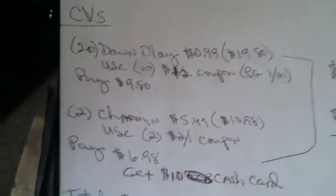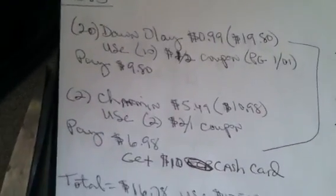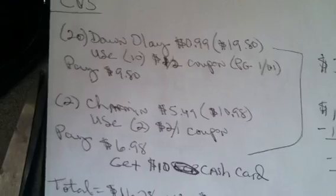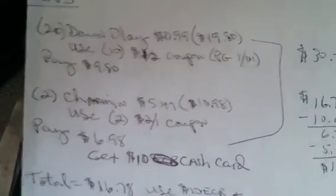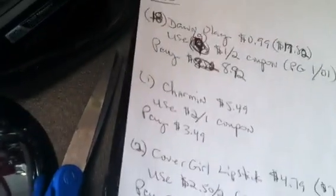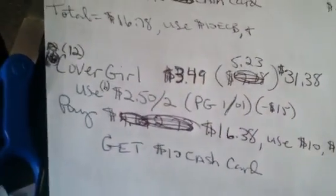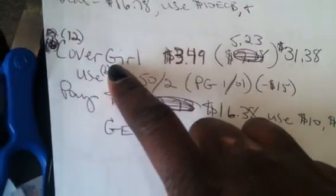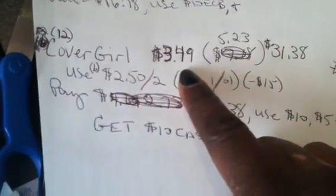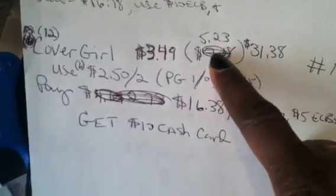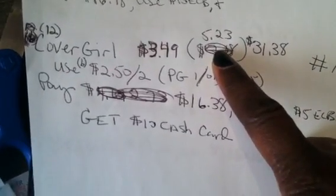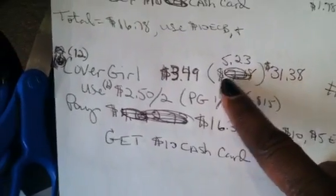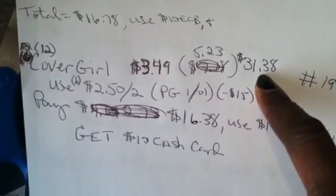So that's the scenario I came up with that I'm going to do for one of the CVS cards that I have. The other CVS card I have I'm going to do is, it's on the same paper, is this scenario where I would do 12 of the CoverGirl single eyeshadows at $3.49. Two of those at a buy one, get one 50% off, it's going to be $5.23. So 12 of those is going to be $31.38.